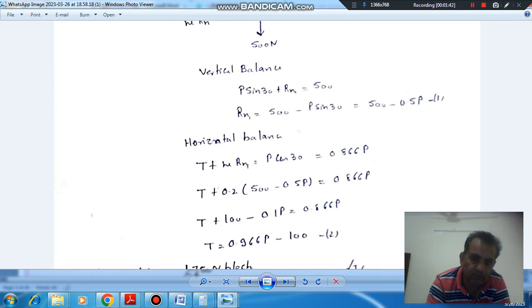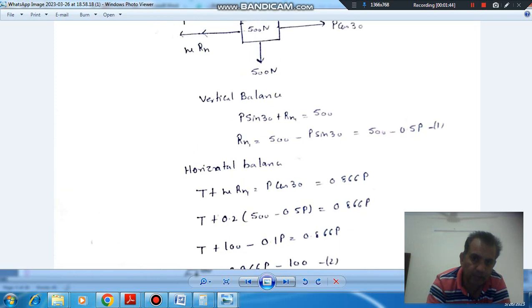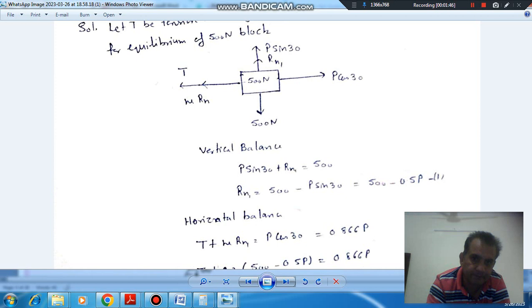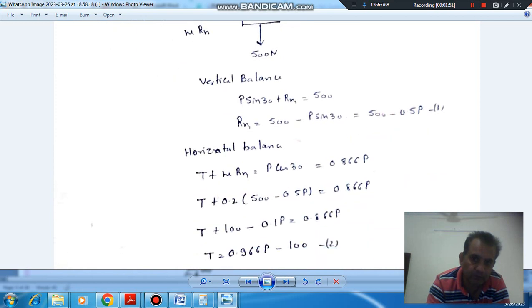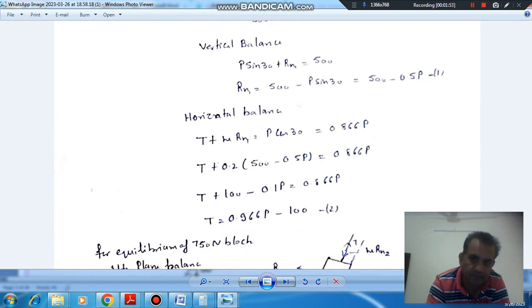So from horizontal balance, we have mu R_N1 plus T will be equal to P cos 30. And R_N1 is 500 minus 0.5P.